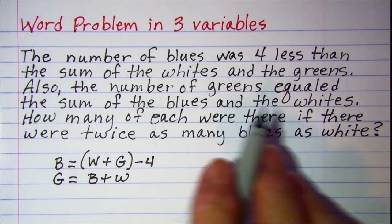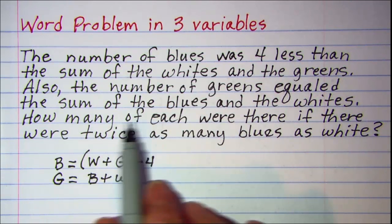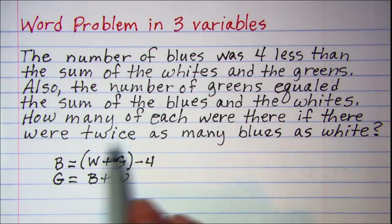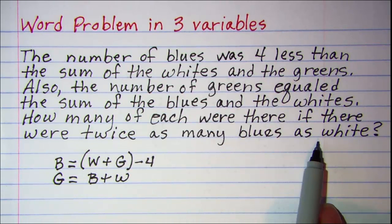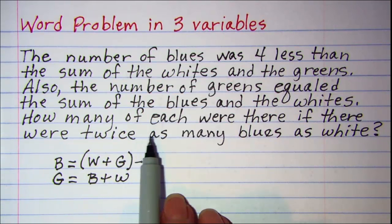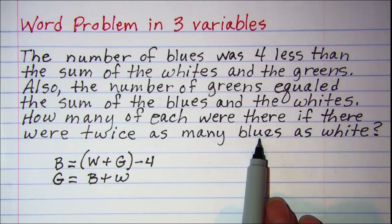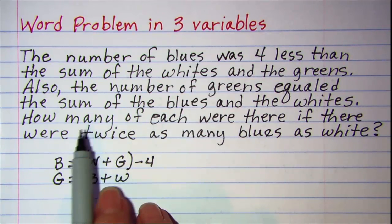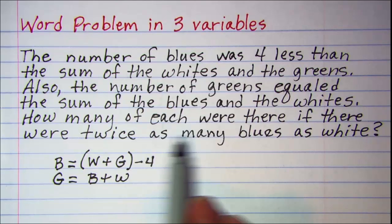And then finally our last sentence, how many of each were there if there were twice as many blues as whites? Now this one also you need to be careful with. You need to first ask yourself which of these is bigger, the blues or the whites? And since it says there's twice as many blues,